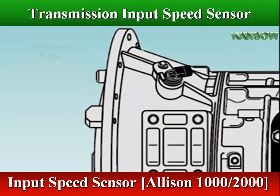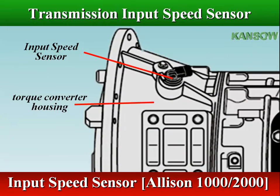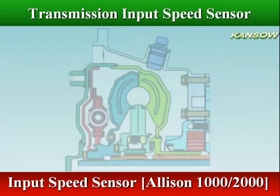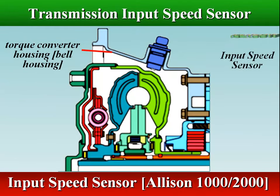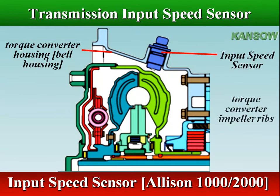In Allison 1000-2000 series, the input speed sensor is mounted externally in the torque converter housing and directed at the ribs protruding from the torque converter.